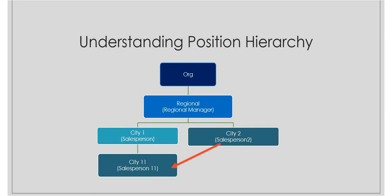My requirement is that a salesperson should be able to see their own records, but at times they also need to see records from different positions in the organization. For example, salesperson two wants to view the records of salesperson one-one, even though they are not under the same business unit or hierarchy, because salesperson one-one is also selling products that salesperson two is assisting with. To meet this requirement — where salesperson two from a different hierarchy needs to view and act on salesperson one-one's records — we use position hierarchy.